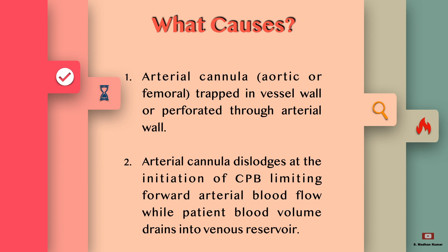It can be caused by an arterial cannula — aortic or femoral — that is trapped in the vessel wall or perforated through the arterial wall. The arterial cannula dislodges at the initiation of CPB, limiting forward arterial blood flow while the patient's blood volume continuously drains into the venous reservoir.